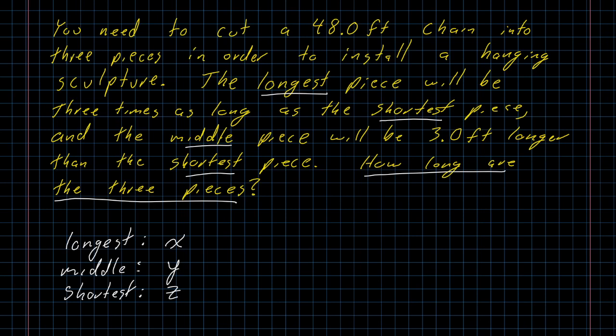Because I have three unknowns, I am going to be looking for three equations in this case. And there are three equations. They're a little bit hidden. So I'm going to start with the one that's really hidden. The chain that we are cutting into three pieces was originally 48.0 feet long.